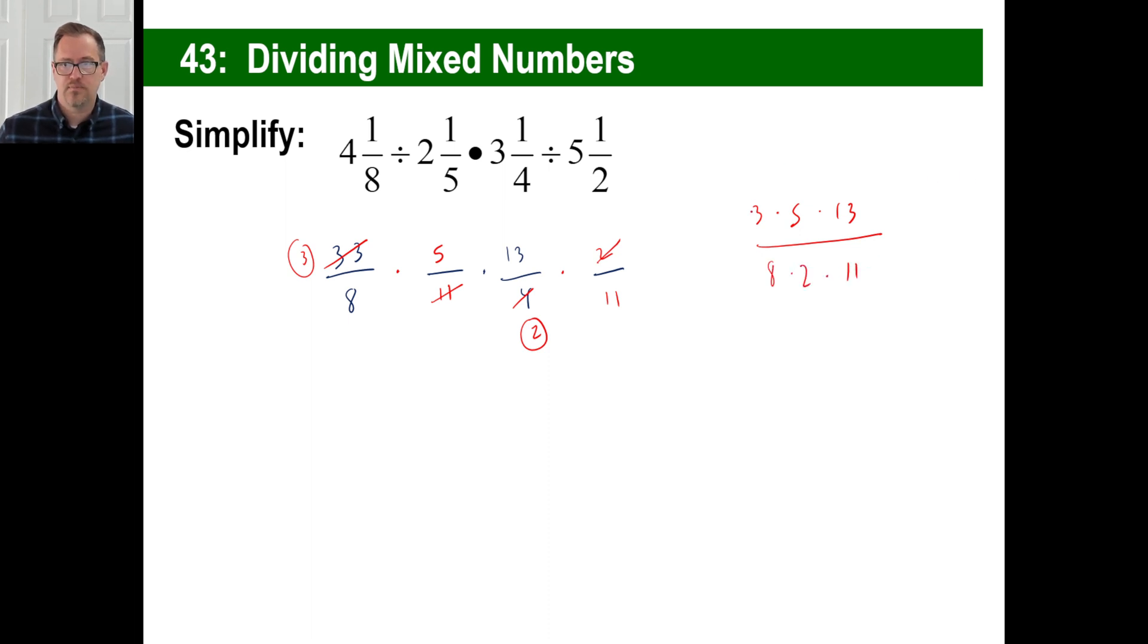Well, the top we have 3 times 5 times 13, and the bottom we have 8 times 2 times 11. Man, this is a mess. 3 times 5, 15 times 13, is 195. 8 times 2 is 16 times 11, 176. Yuck.